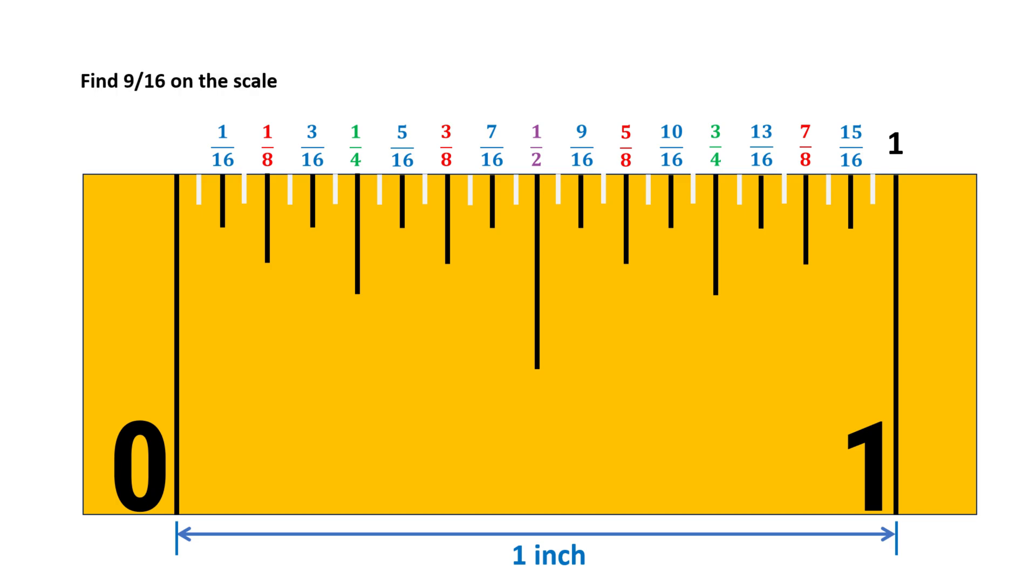For example, to find 9/16ths, recognize that the shortest marks represent 16ths. Count these using odd numbers: 1, 3, 5, 7, and so on until you reach 9/16ths. The same method works for 1/8th inch and 1/4th inch marks.